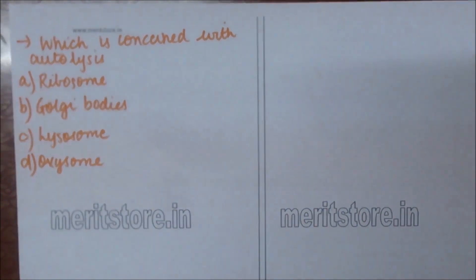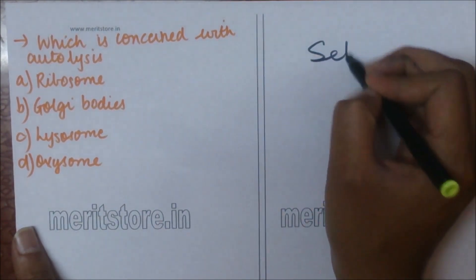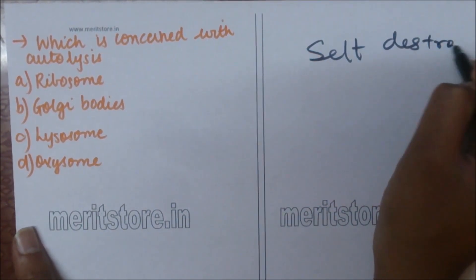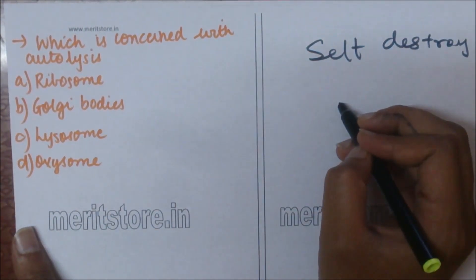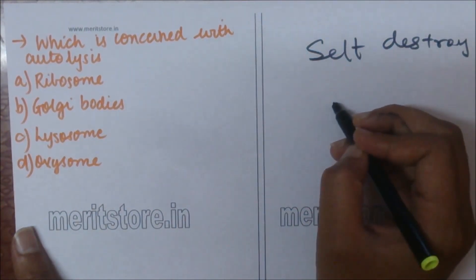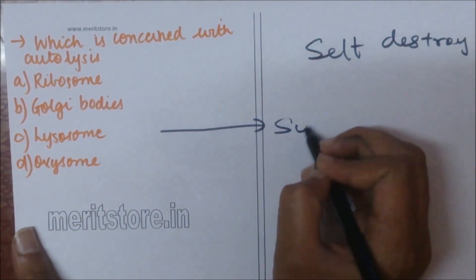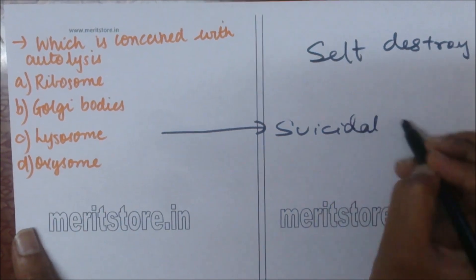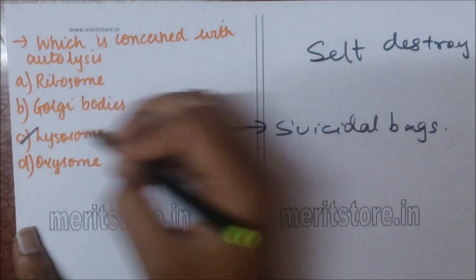Which is concerned with autolysis? A) ribosome, B) Golgi bodies, C) lysosome, D) oxysomes. Autolysis means self-destroying. This is seen in lysosomes, which destroy other detritus and at times their own organelles. That's why lysosomes are known as suicidal bags. Option C is the correct answer.